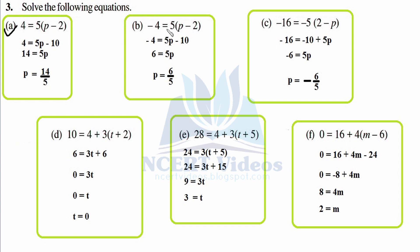Part b: minus 4 equals 5 times (p minus 2). Opening: minus 4 equals 5p minus 10. Transpose minus 10 to the left: minus 4 plus 10 is 6 equals 5p. Divide both sides by 5, so p equals 6 over 5. You can interchange positions: 5p equals 6 is the same.